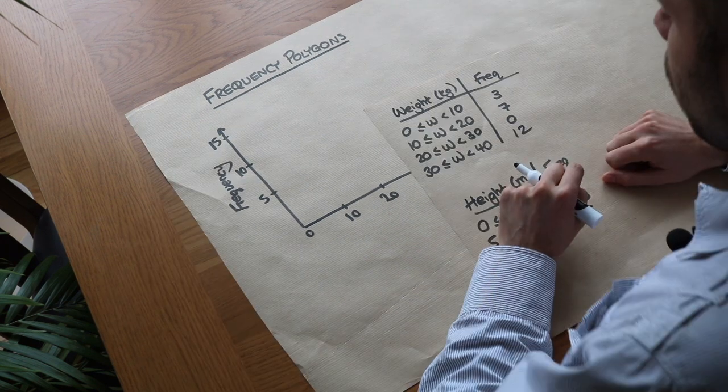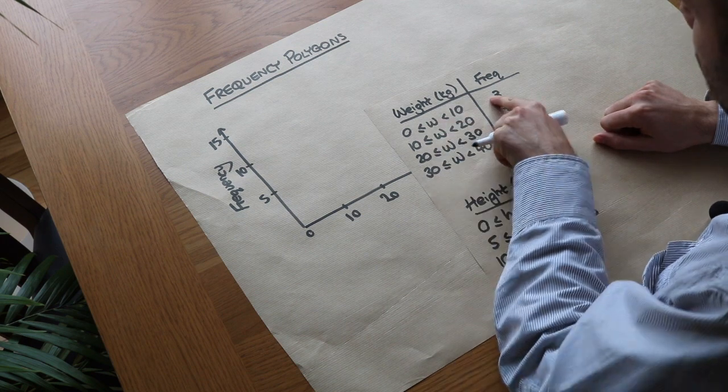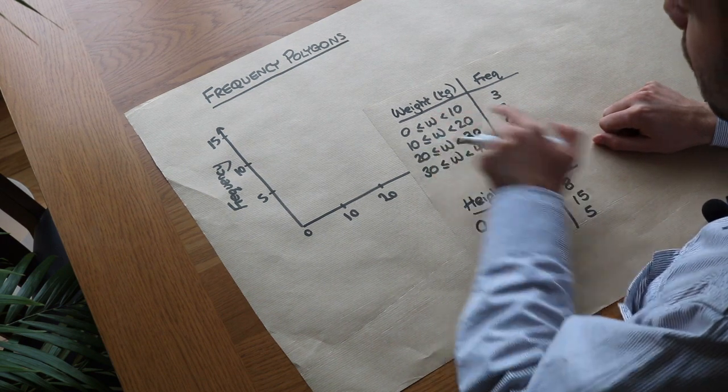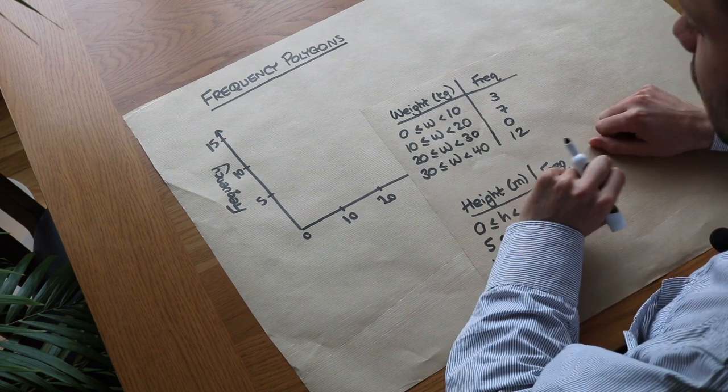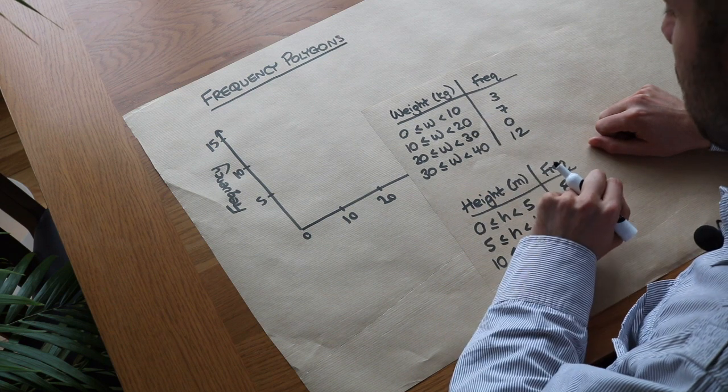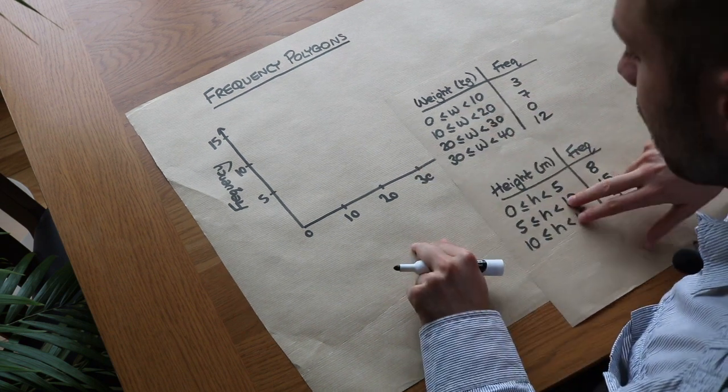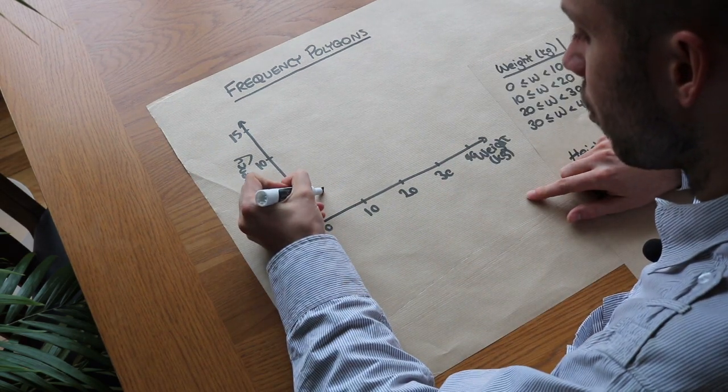Now we need to plot a single point for each of these intervals. So what would be a good weight to represent those three people in the 0 to 10 interval? Now we don't know their weight, but 5 kilograms in the middle of this interval would be a good weight if we had to choose a single weight to represent those three people. And what we do is we use that midpoint of 5 kilograms with a frequency of 3, so we do 5 and then up to 3 on the y-axis, the frequency axis.